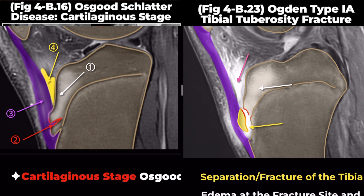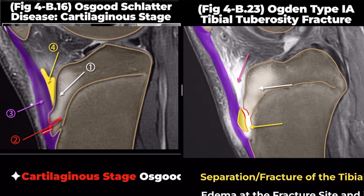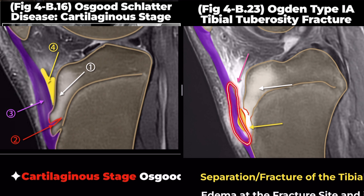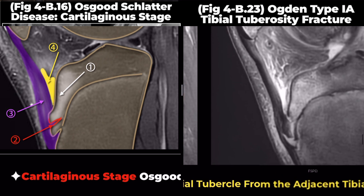Osgood-Schlatter disease is a chronic avulsion injury at the patellar tendon insertion on the tibial tuberosity, typically resulting from repetitive overuse. This leads to thickening and mild signal intensity alteration of the patellar tendon near its insertion. However, in tibial tuberosity fractures, changes in the patellar tendon are not as pronounced.